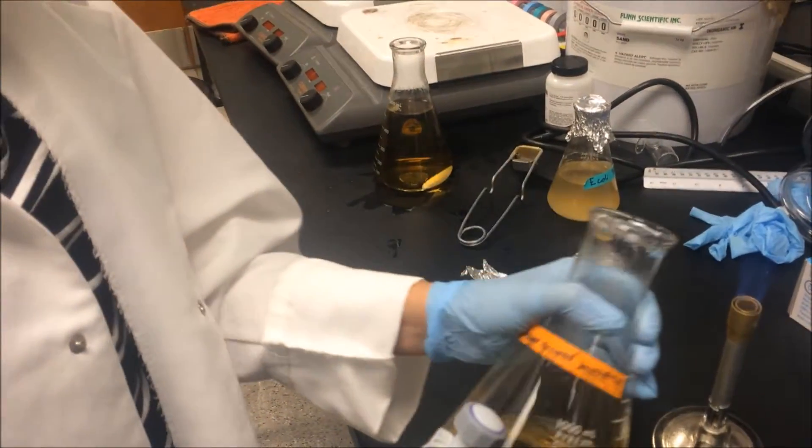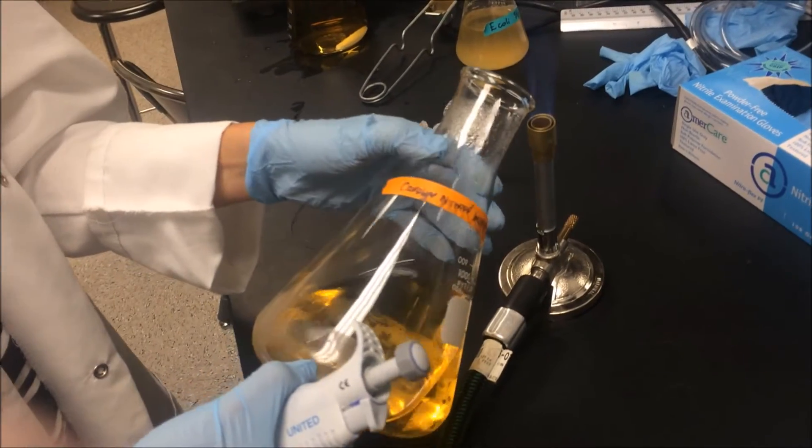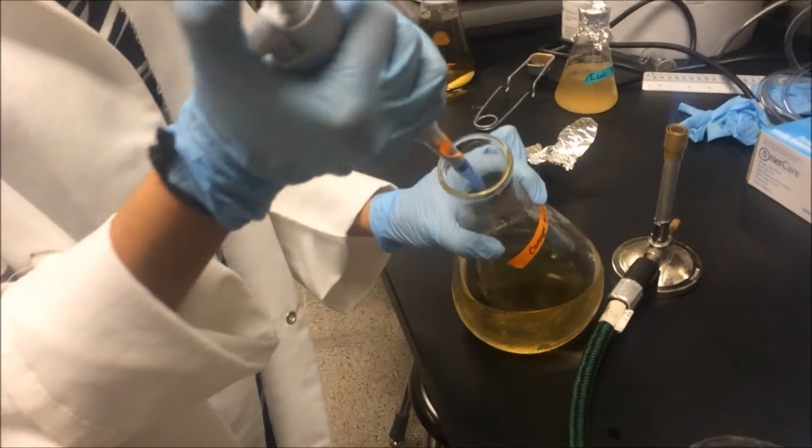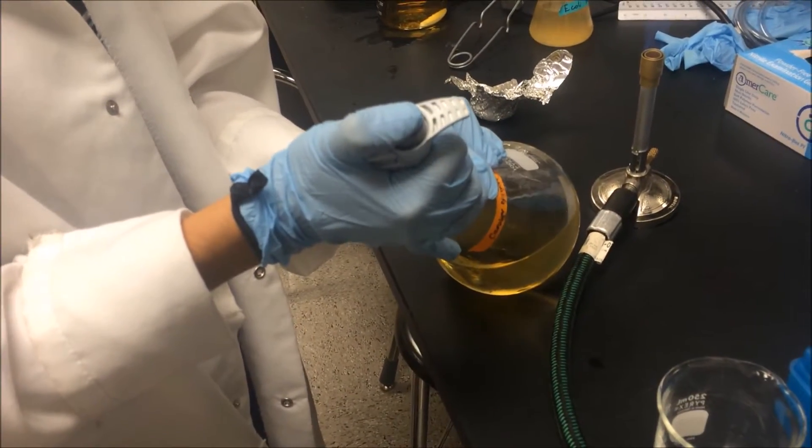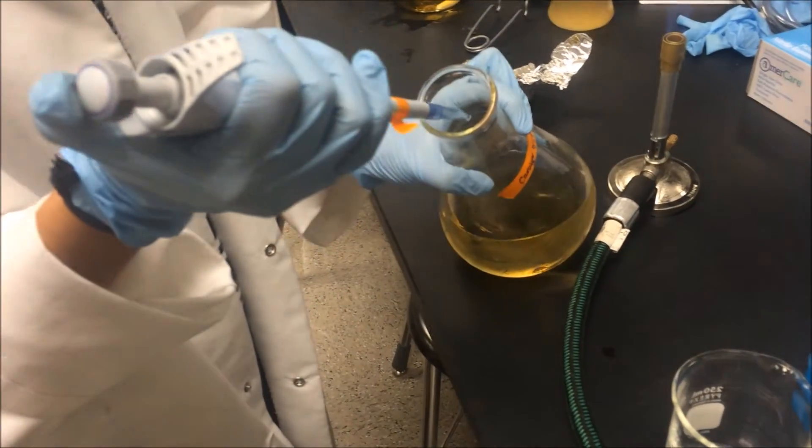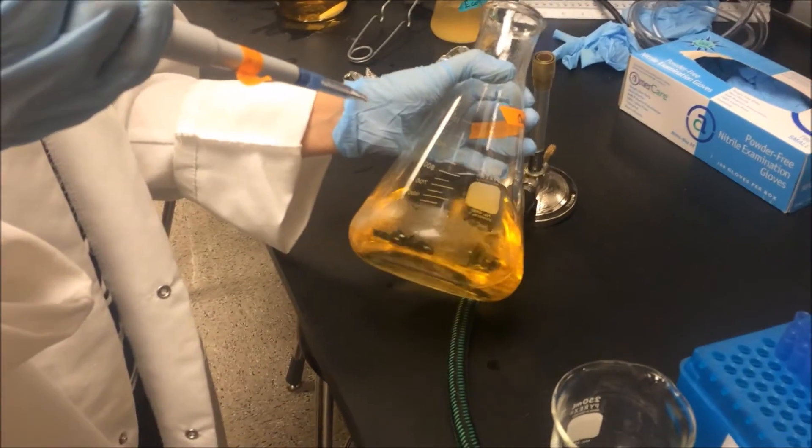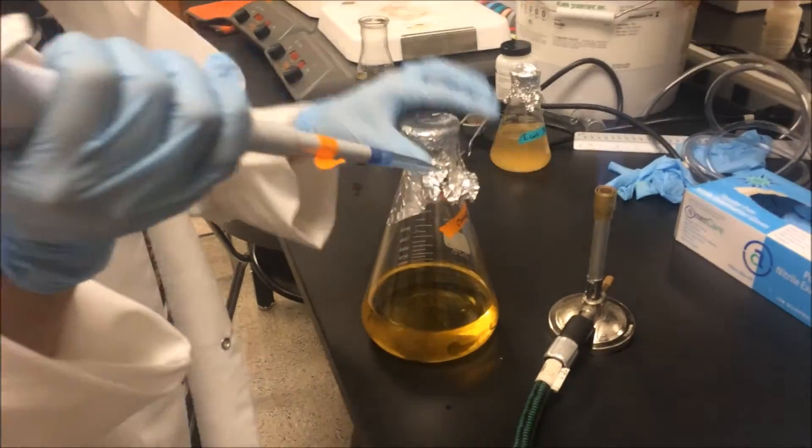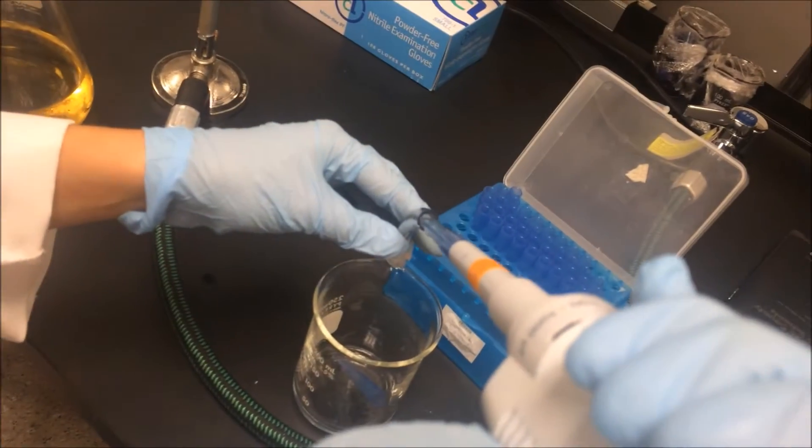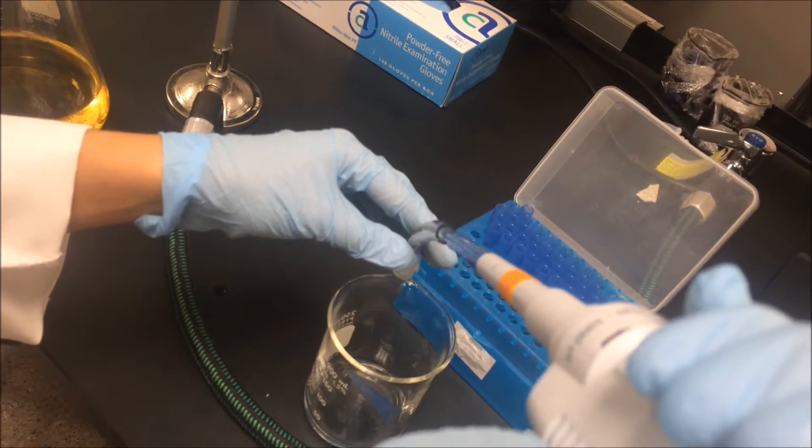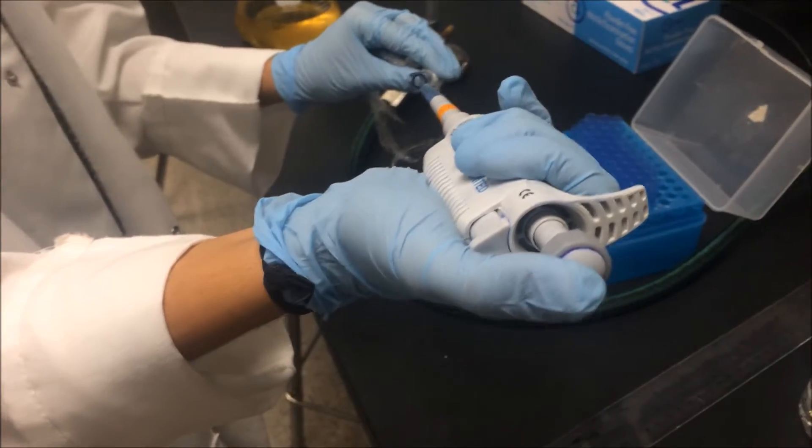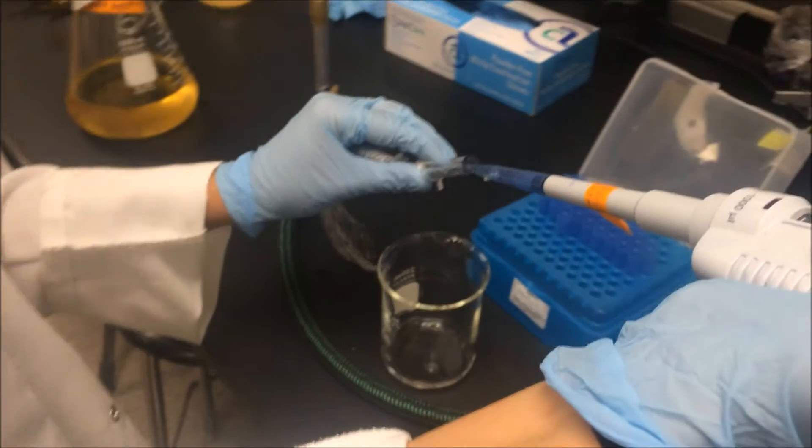Get nutrient broth and flame lid to kill all bacteria. Now get 1,000 microliters of nutrient broth. Flame the lid again to kill bacteria before putting the cap back on. Put the nutrient broth in the tube. Now discard pipet tips. Repeat the last step so you have 2,000 microliters of broth in the tube.